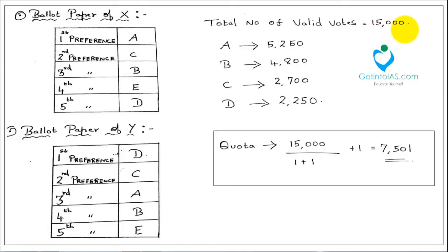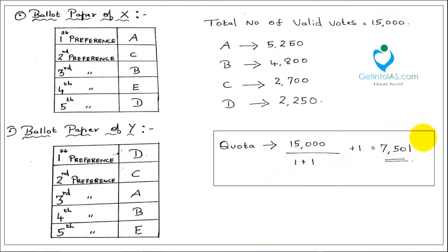Consider the total valid votes are 15,000. In the first counting, all first preference votes are counted. Suppose A gets 5,000 votes and others share the rest. The electoral quota formula is: total valid votes divided by 2, plus 1, which gives 7,501. It is clear that nobody — A, B, C, or D — has secured 7,501 votes, so nobody is elected at this stage.